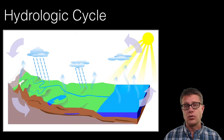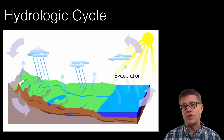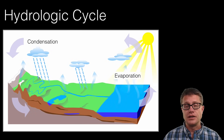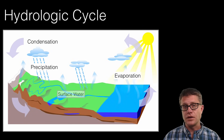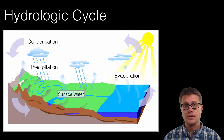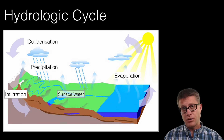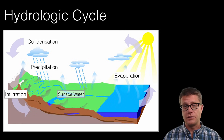The hydrologic cycle works like this: anywhere there is water on the surface we can have evaporation. That gets cooled and eventually leads to condensation and precipitation. Once it is on the surface we call that surface water — it is running over the surface, in lakes, swamps, and rivers. After the water hits the ground, it can be infiltrated into the soil and the ground itself.